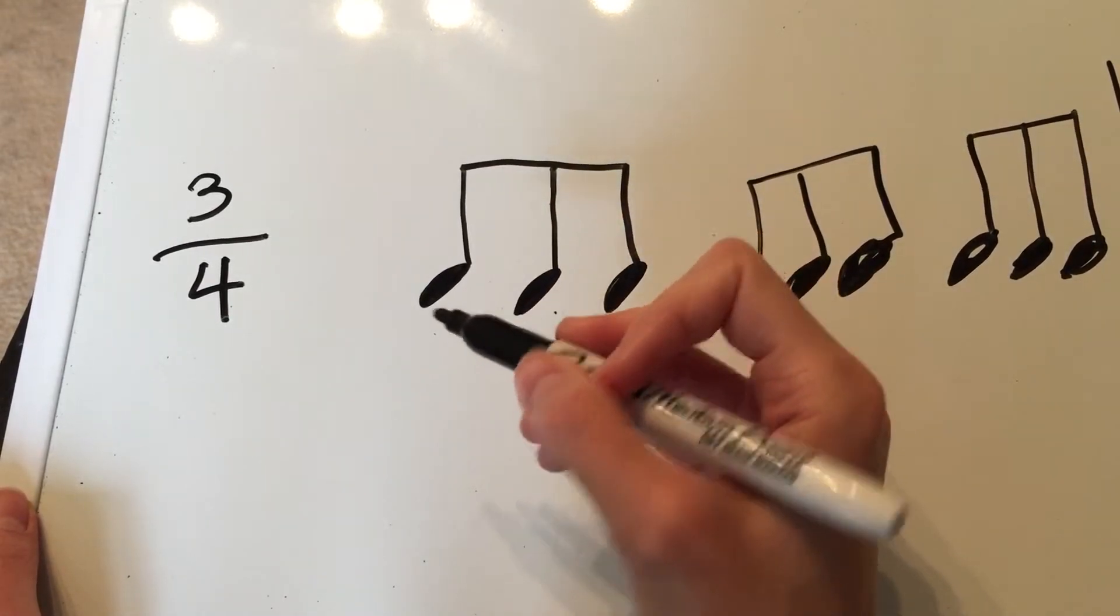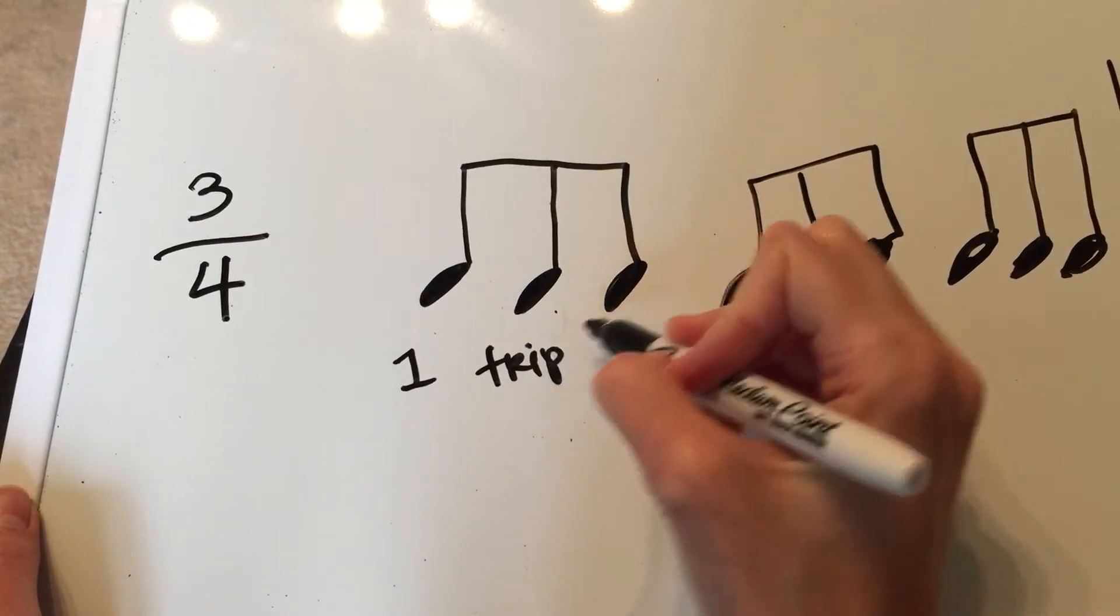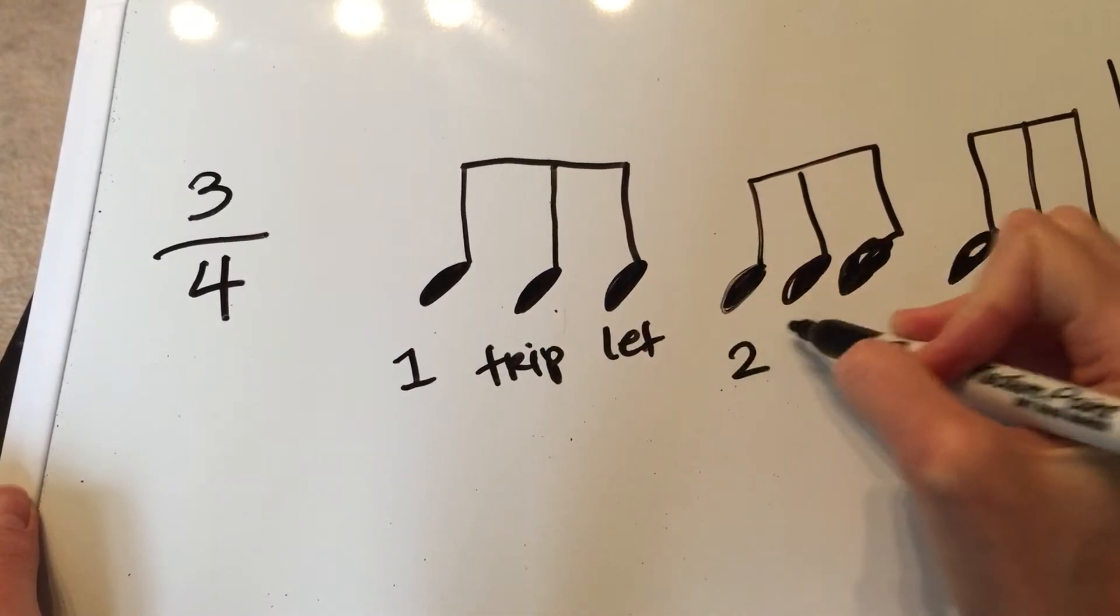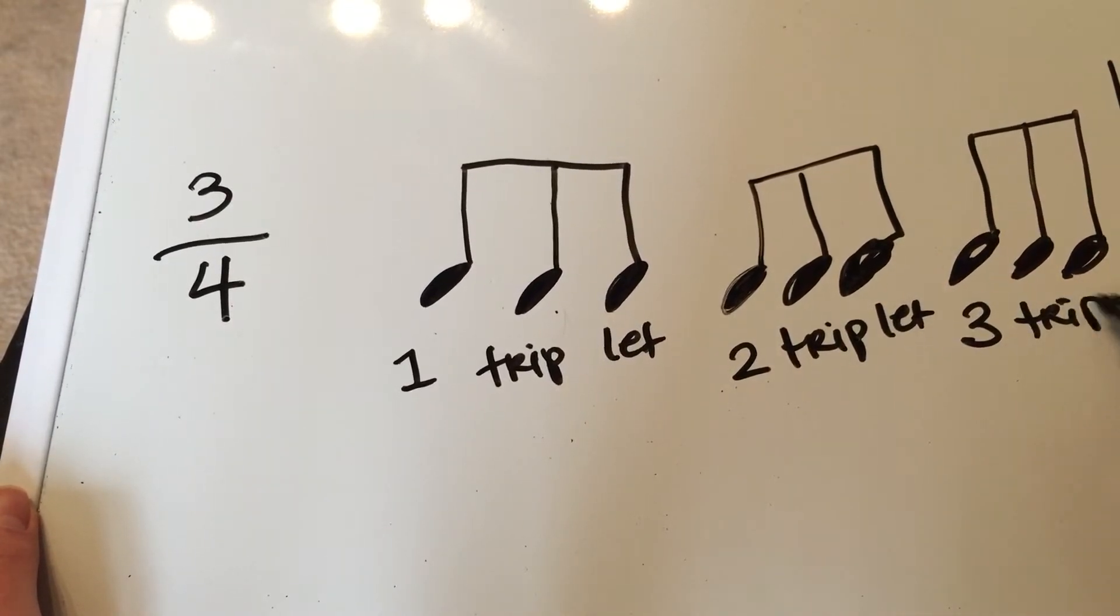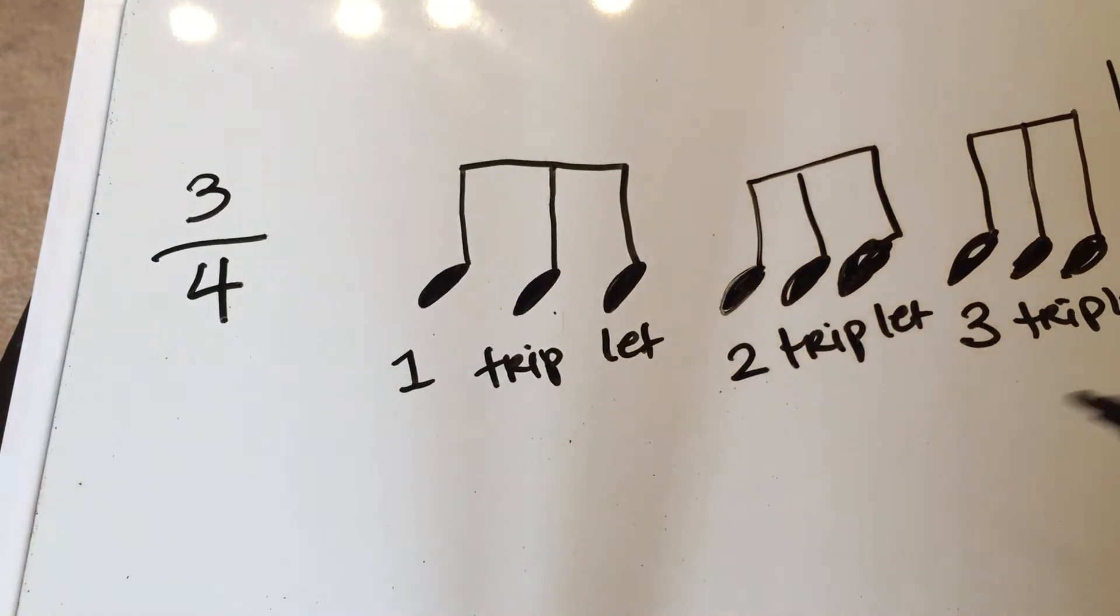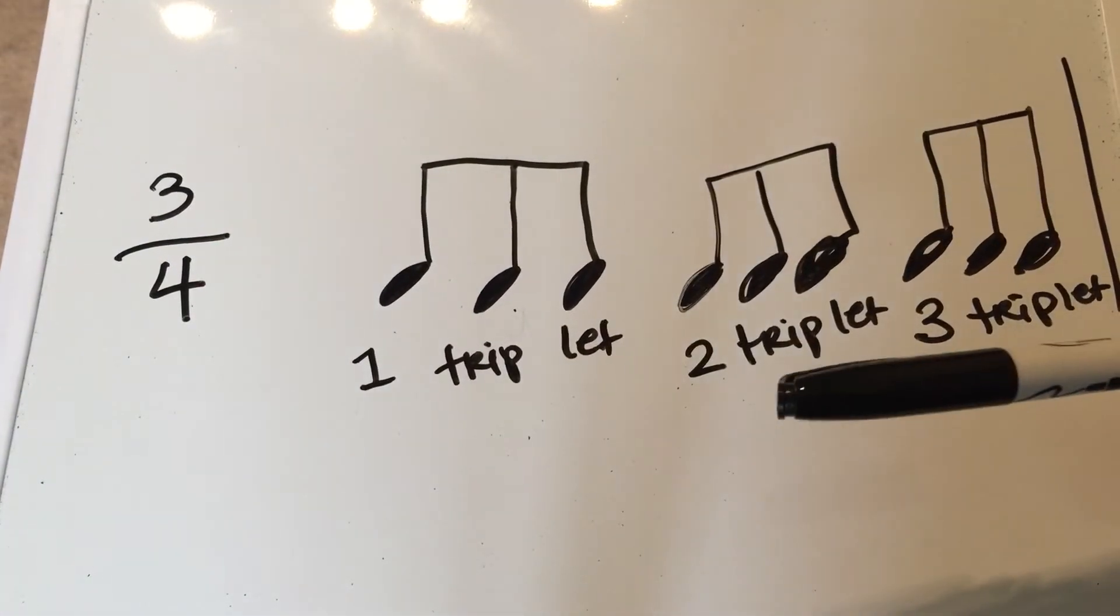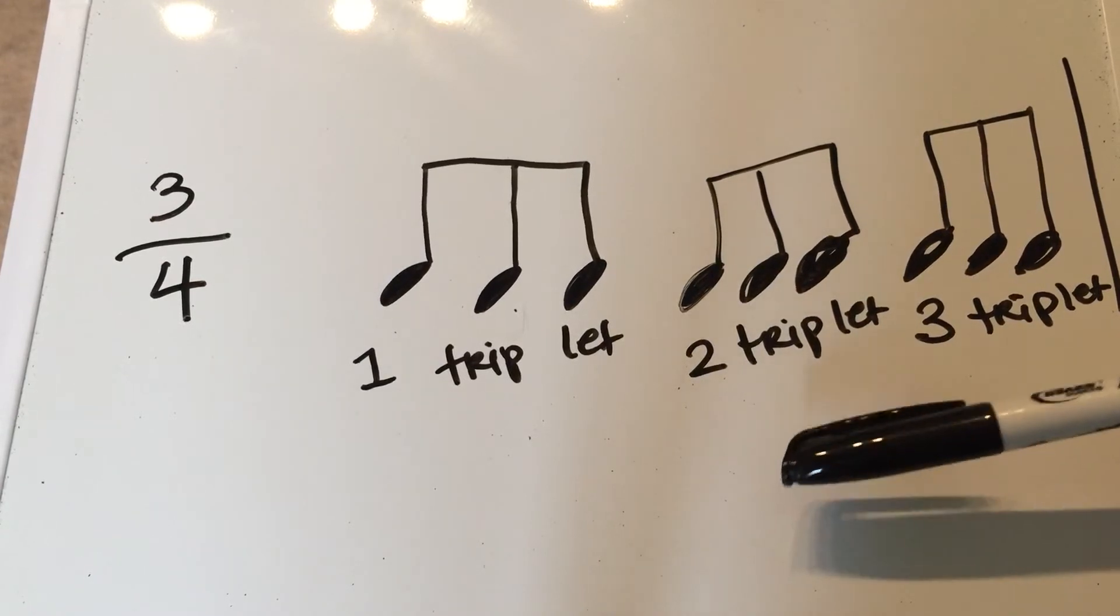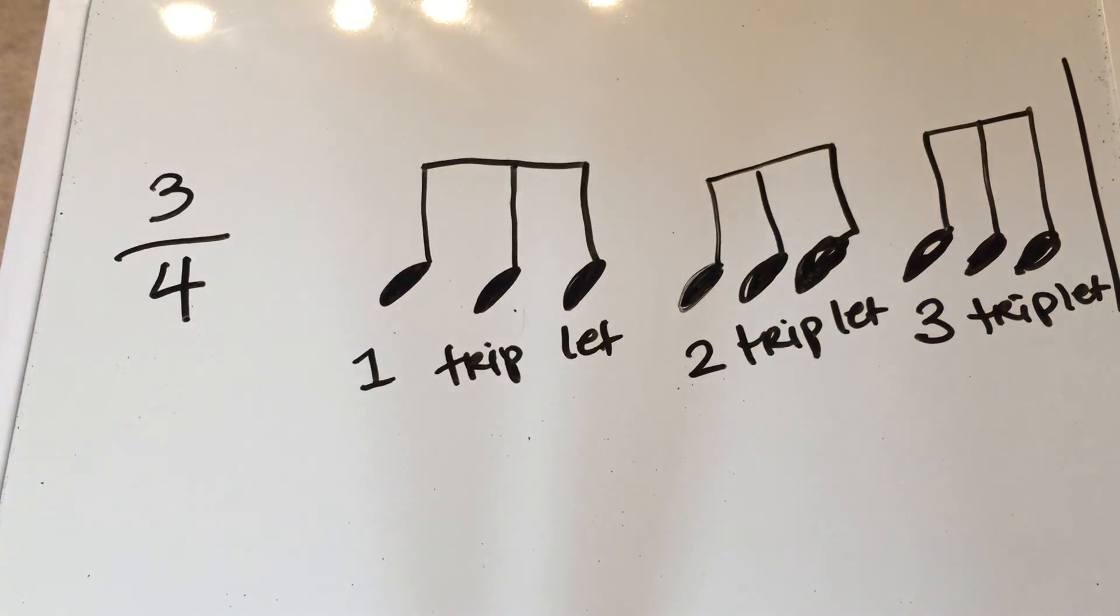So the way you can kind of count in your head is you could say one triplet, two triplet, three triplet. So if we were to tap it out or play it on a piano key, it would go one triplet, two triplet, three triplet. So that's how triplets work.